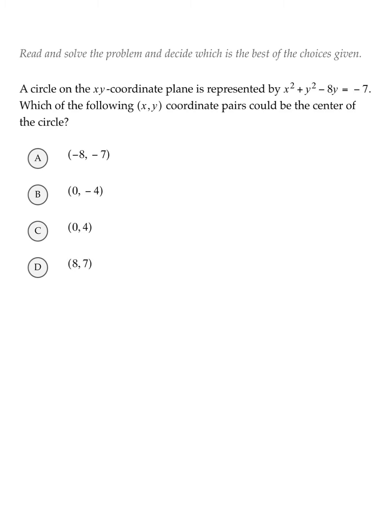This new SAT math question features a skill that College Board is testing more and more on the new SAT than it did on the old SAT. That skill is based on the equation of a circle, which is x minus h squared plus y minus k squared equals r squared.